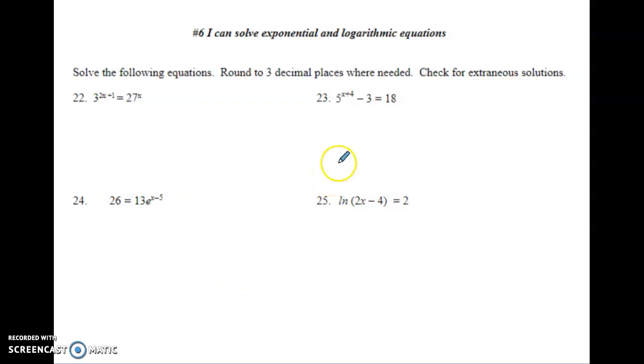Alright, let's start with number 23. When we first look at this, we see the x is in the exponent, and we want to get that exponent alone so we can solve for x. I've got to get rid of that 3, so I'm going to add 3 to both sides, and then we get 5 to the x plus 4 equals 21.